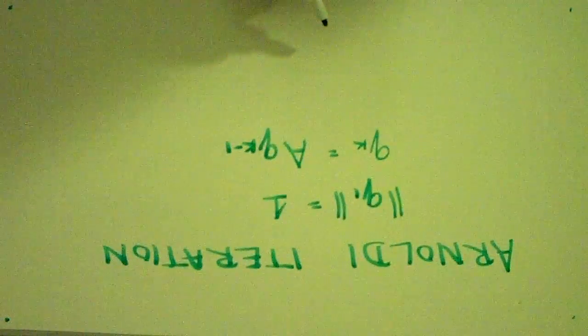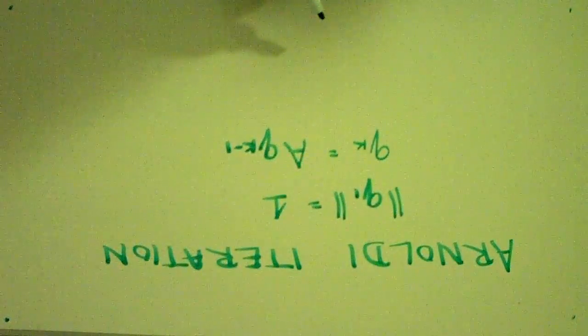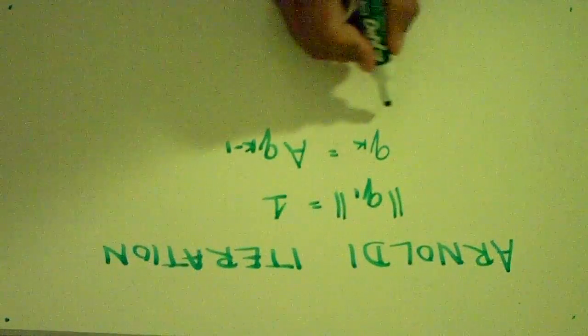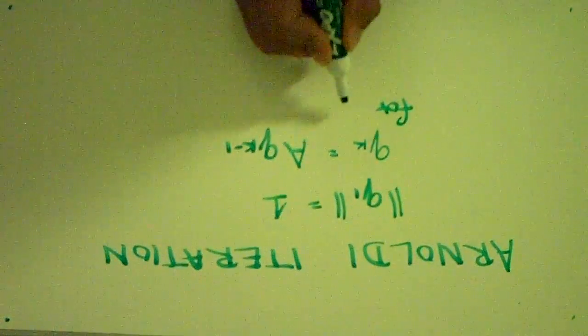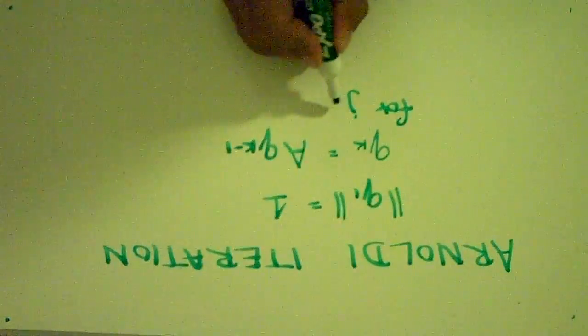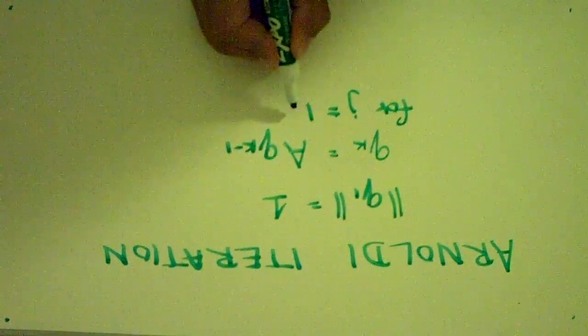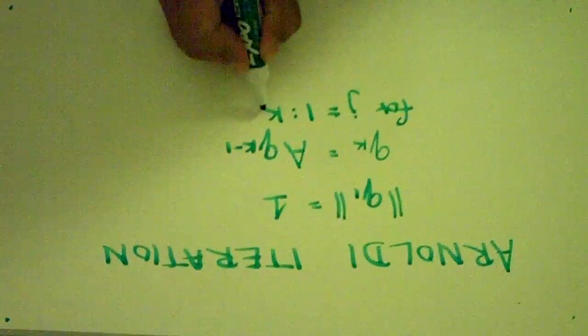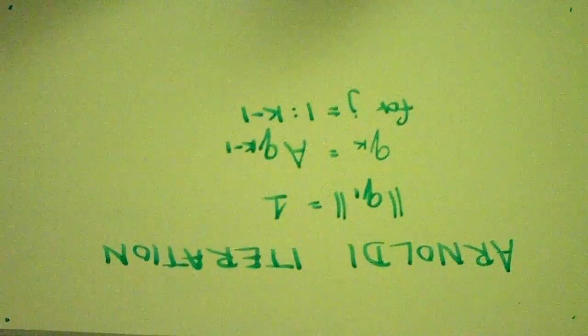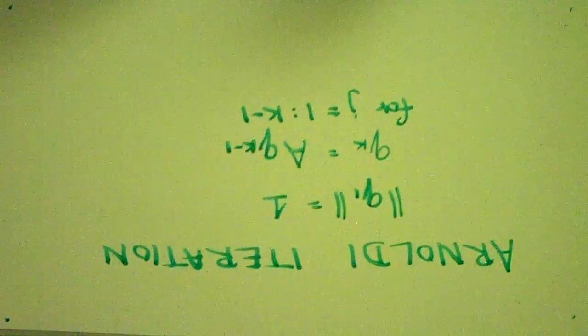Then, to orthogonalize this, we would want to find for all J between 1 and K minus 1, since we want to make it orthogonal to all the vectors before K.